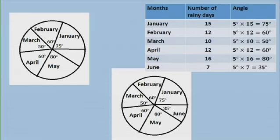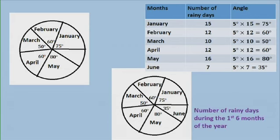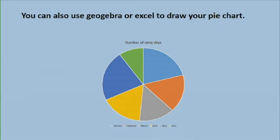So here is our pie chart. Remember, you need to give a title — 'Number of Rainy Days During the First Six Months of the Year.' You can also make use of mathematical software GeoGebra or Excel to draw your pie chart. Here is an example of the pie chart drawn using Excel, using the frequency table from the previous example.